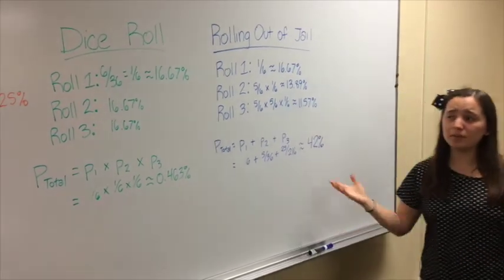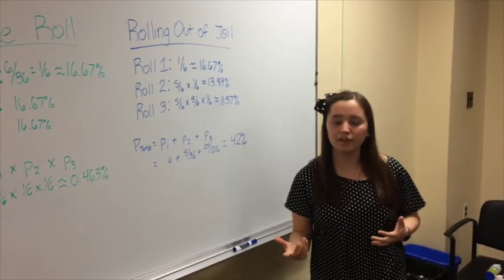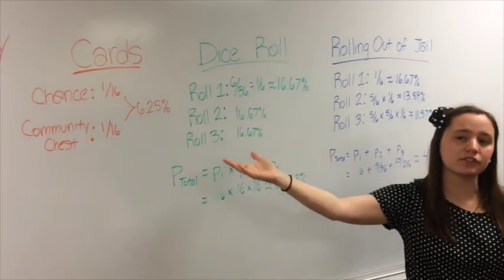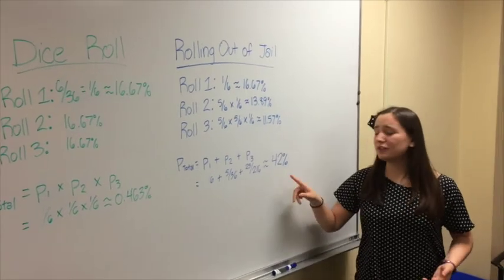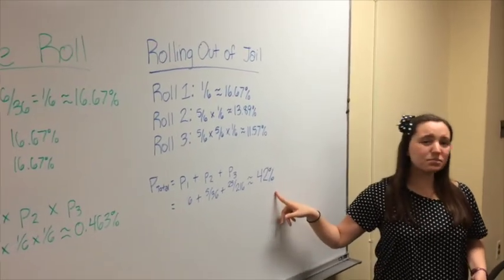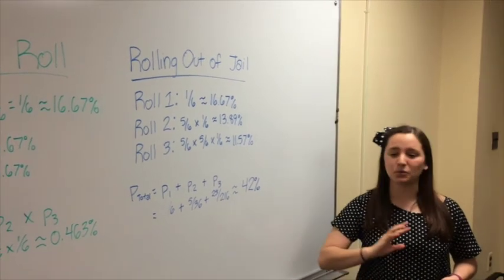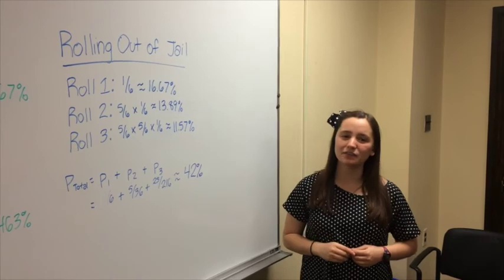So just kind of as a little summary, if you are in the game Monopoly and you're worried about going to jail, you are more likely to go to jail from drawing a chance or a community chest card rather than rolling doubles three times. But if you do end up in jail, there's a 42% chance that you can roll out, and that's pretty high. So if you're stuck in Monopoly, I encourage you to just roll and wait out the three turn because chances are you may end up getting out of jail for free.